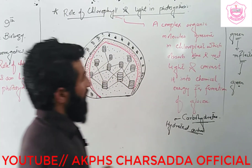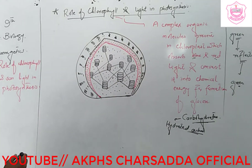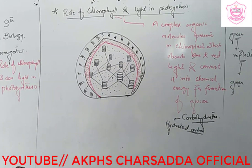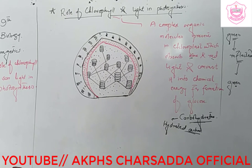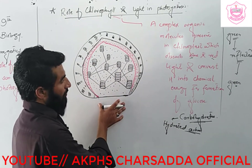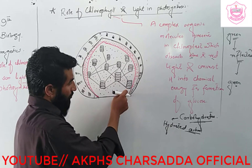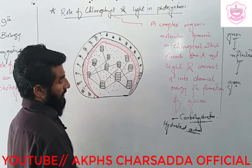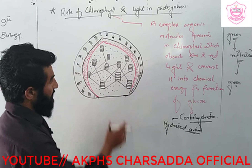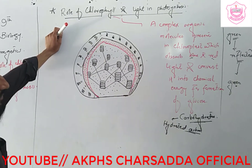In higher plants and in photosynthetic organisms, chlorophyll is present inside the chloroplast. In photosynthetic bacteria, the chlorophyll is present in the cell membrane. This is a typical structure of the chloroplast.